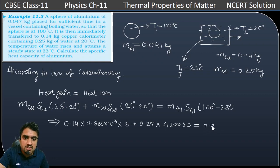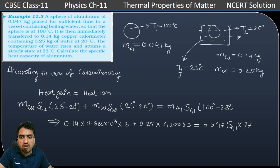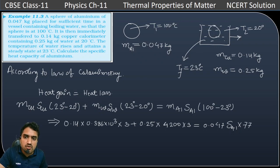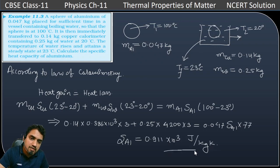The mass of aluminum is 0.047 kg. We need to find the specific heat of aluminum, denoted as S. The temperature difference for aluminum is 100 minus 23, which equals 77 degree Celsius. Solving this equation, the specific heat of aluminum comes out to be 0.911 × 10³ joule per kg per Kelvin. That is the answer. Thank you.